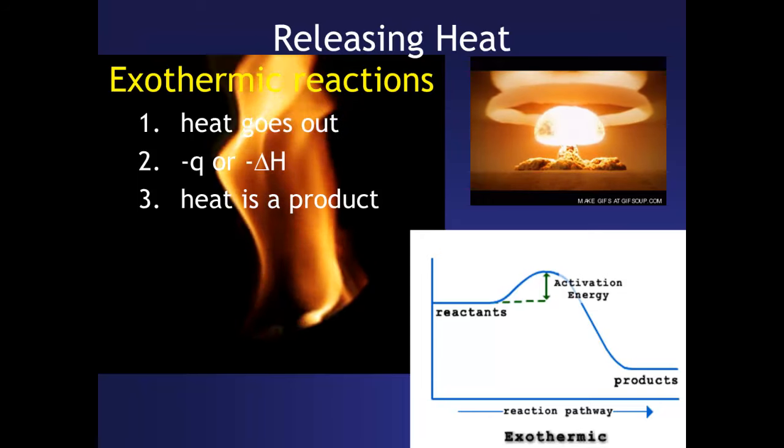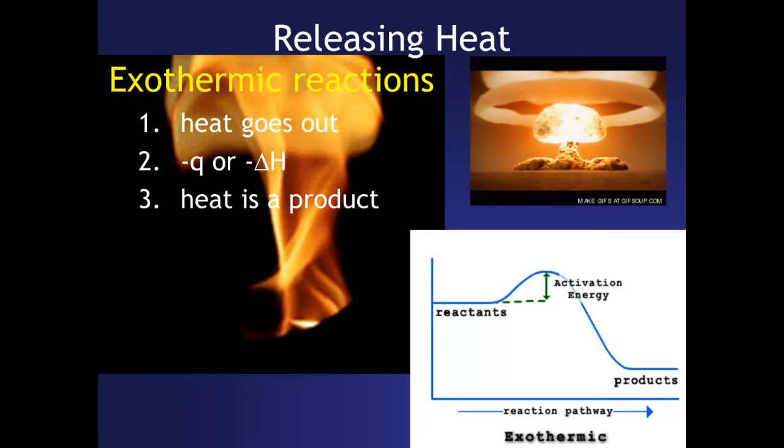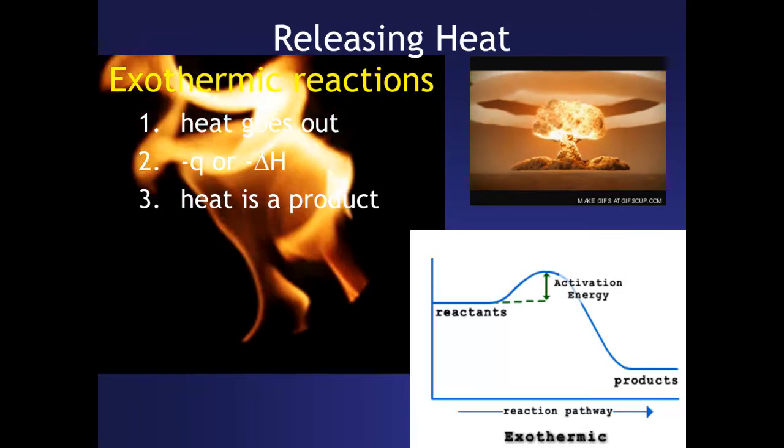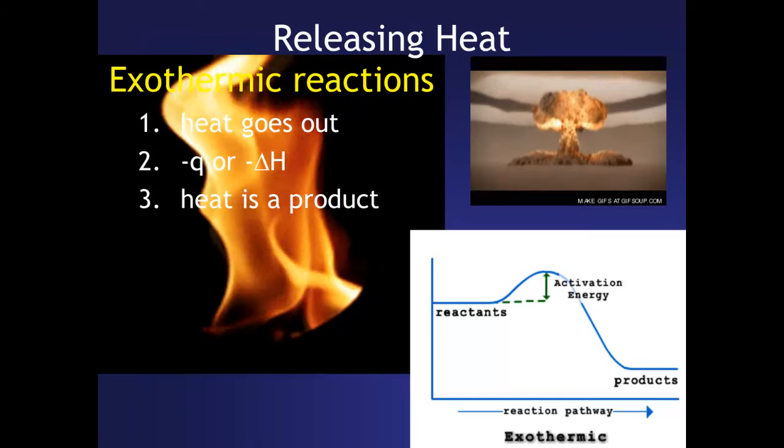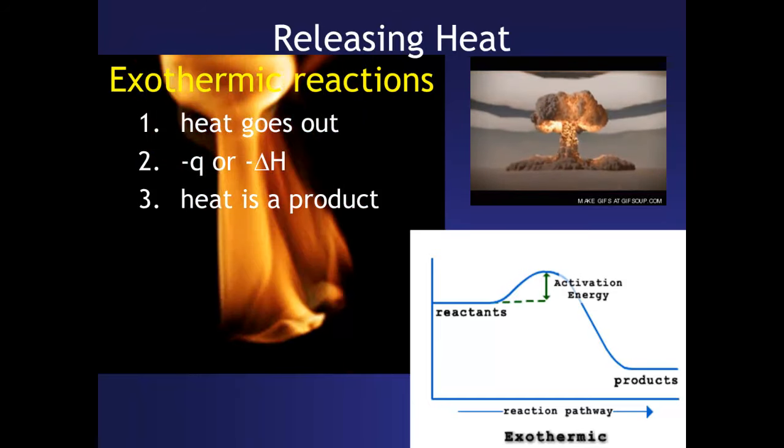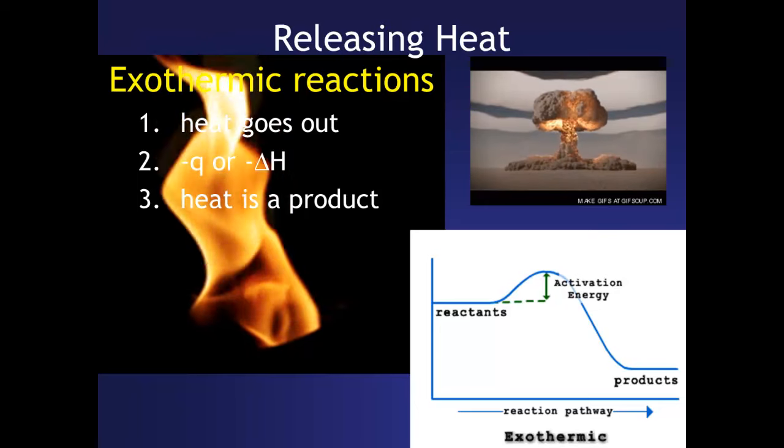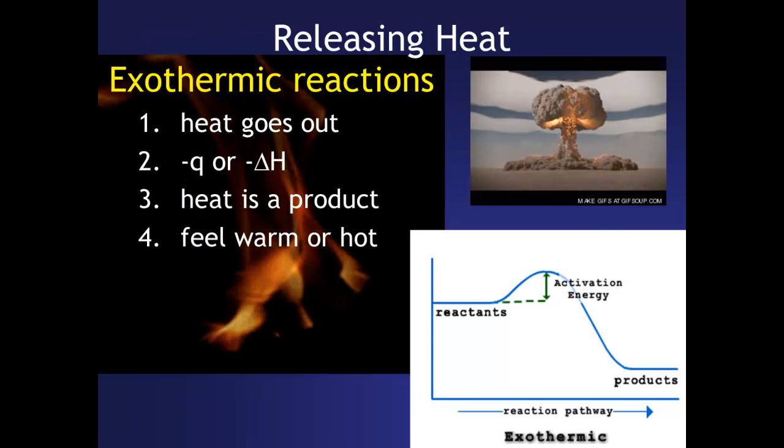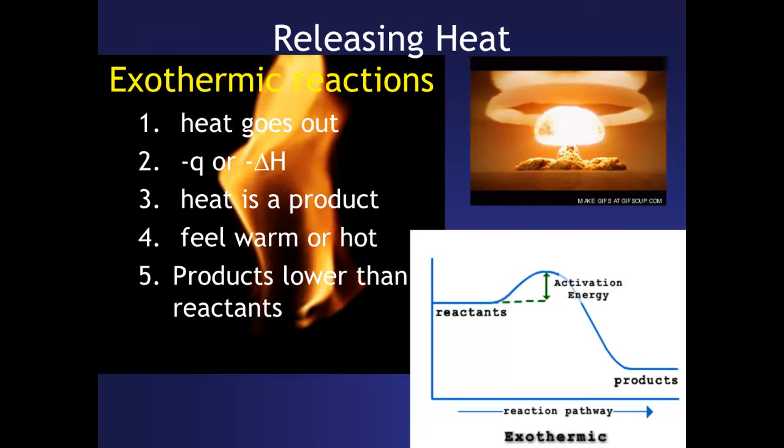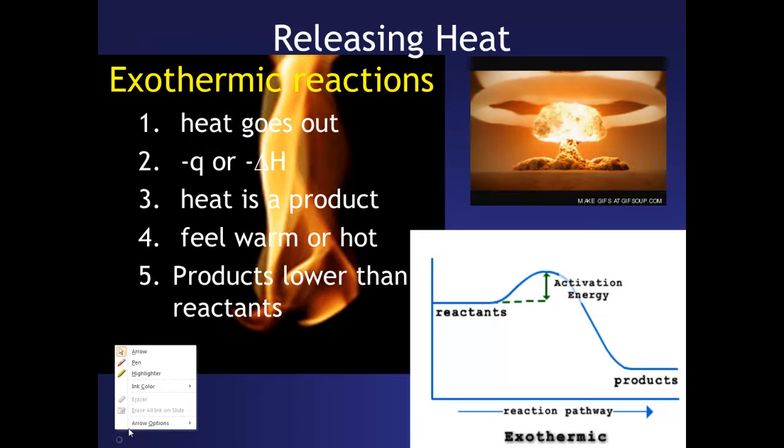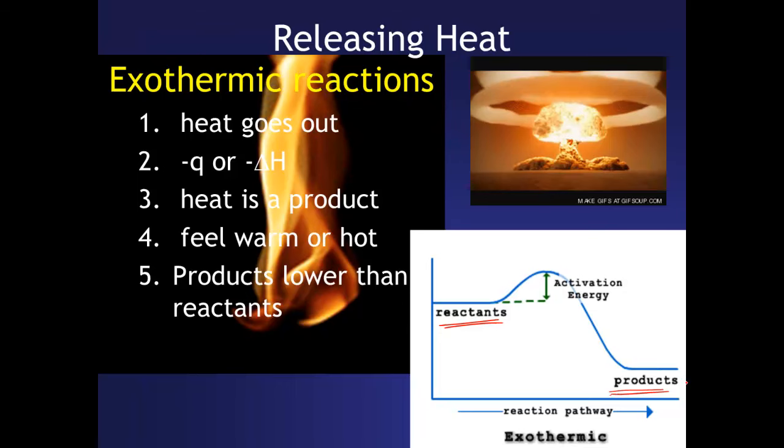So just like the others, the Q now or the delta H is a negative. For endothermic, it was positive. So now exothermic, it's the opposite, which is a negative. Heat will be on the product side of the reaction. So that means on the right-hand side of the arrow. I just got done saying it's going to feel warm or hot if you are touching it. And the products will be lower than the reactants in one of these diagrams. So here's my reactants now. Here's my product. So you can see the products are at a lower level on this reaction coordinate diagram.